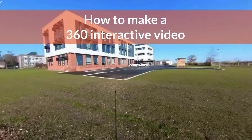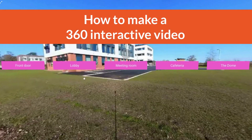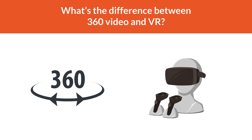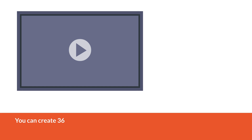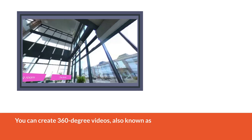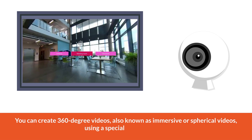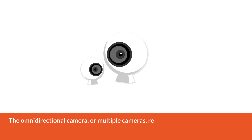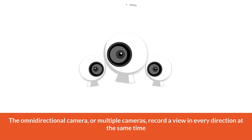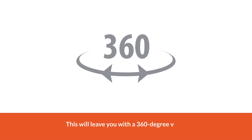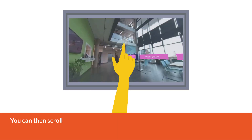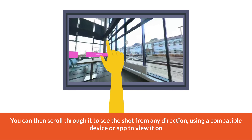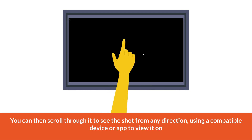How to make a 360 interactive video. What's the difference between 360 video and VR? You can create 360 degree videos, also known as immersive or spherical videos, using a specific type of camera. The omnidirectional camera, or multiple cameras, records a view in every direction at the same time, leaving you with a 360 degree video. You can then scroll through it to see the shot from any direction, using a compatible device or app.